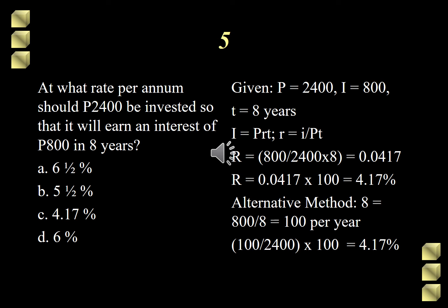The next and the last thing that we should do is to find what is the percentage of this 100 in comparison with the principal. We divide 100 by 2,400, that equals 0.0417. Multiply it by 100 will give me 4.17%. 800 is the interest for 8 years. To get the interest per year, simply divide 800 by 8, that gives me 100.